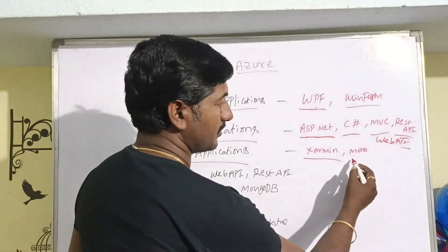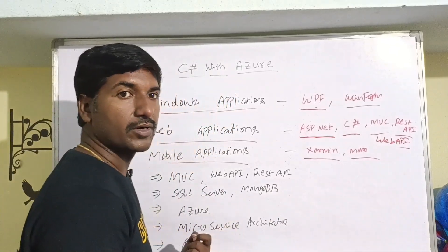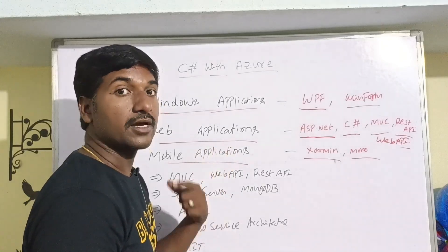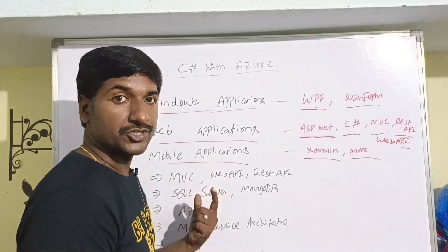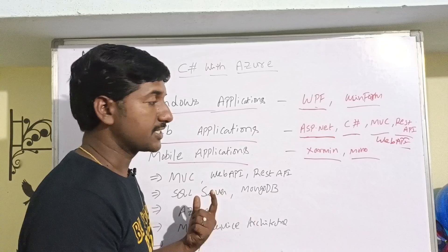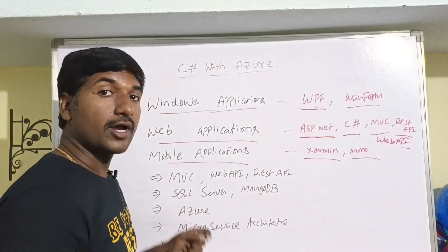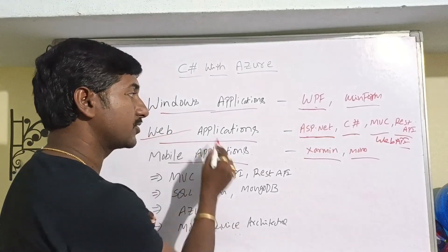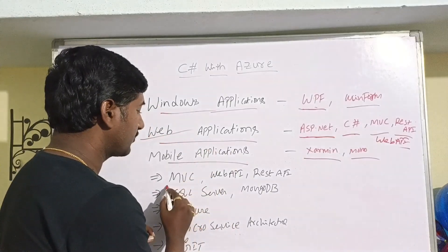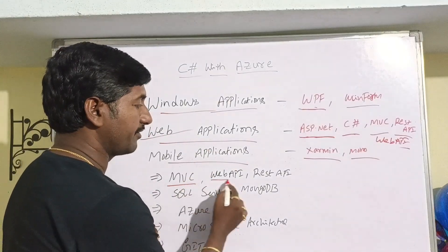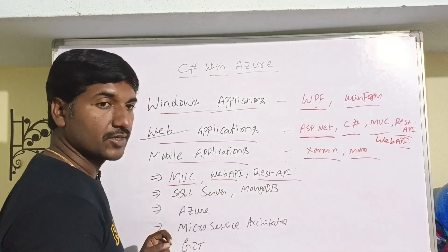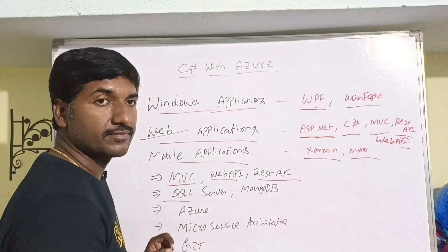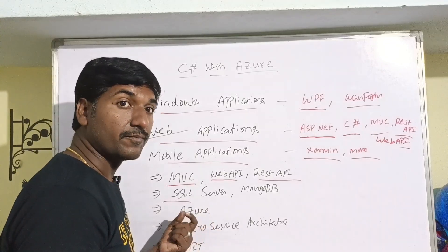In case you want to become a mobile application developer, then you have to focus on Xamarin. That is up to you — what type of job you want to choose, based on your dreams or your skill set. Most candidates are choosing web application developer, and for that you must have the required skills: MVC, Web API, and REST API.